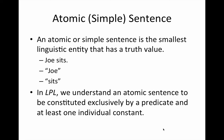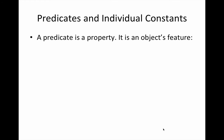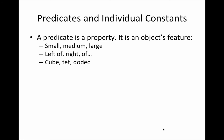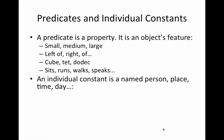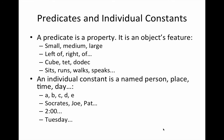Remember, in LPL we understand an atomic sentence to be constituted exclusively by a predicate and at least one individual constant. A predicate is a property — it is an object's feature: small, medium, large; left of, right of; cube, tet, dodeck; sits, runs, walks, speaks, and so forth. An individual constant is a named person, place, time, day, and so forth. So in Tarski's world, as well as in Boole and Fitch, we have names like A, B, C, D, E, Socrates, Pat, Joe, or other names, the time of day, the day of the week, and so forth. So we have a property and a name.